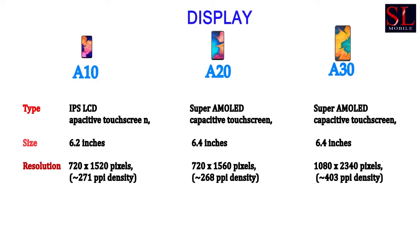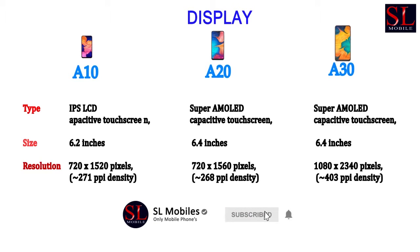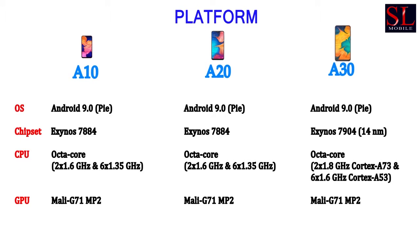The A20 and A30 display size: the display size is 7050. The display resolution for the A20 is 8565, and for the A30 it is 8565 as well. The A10 display runs Android 9.0.